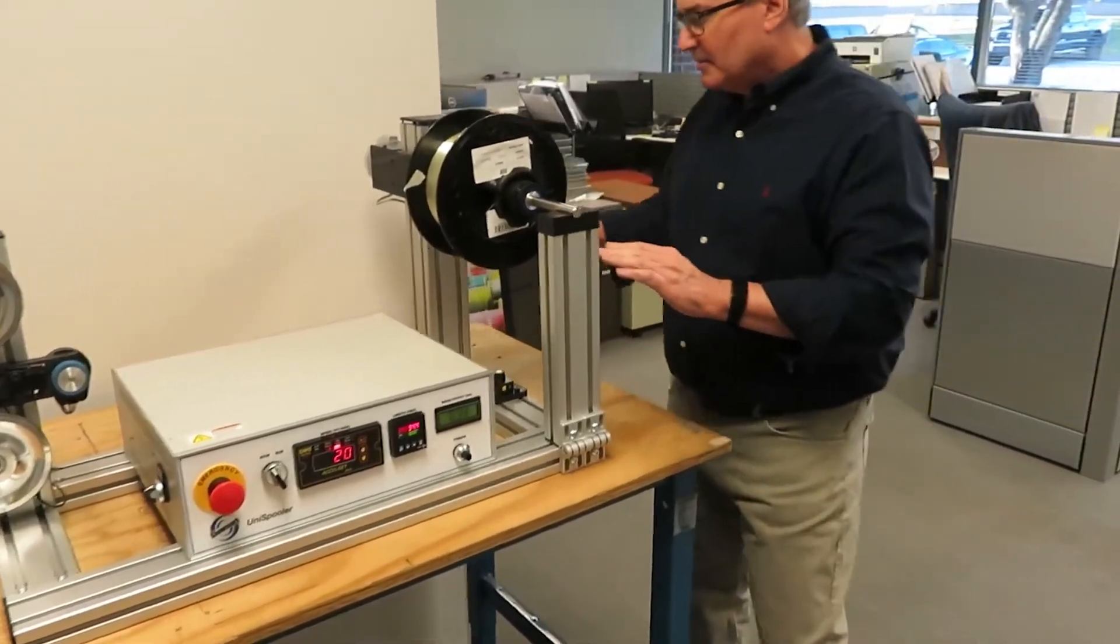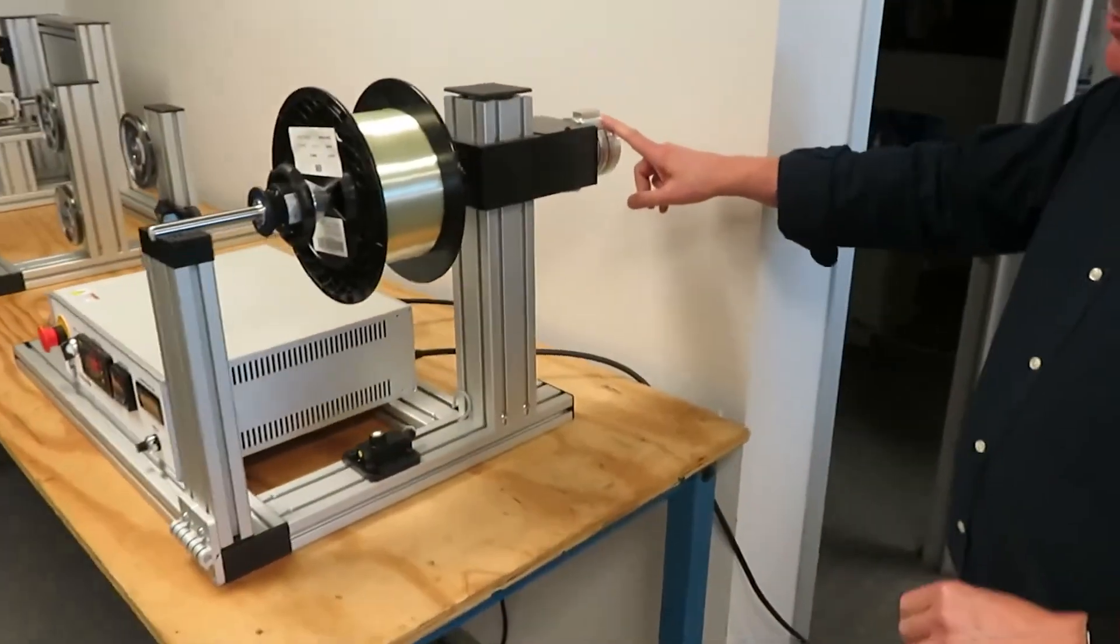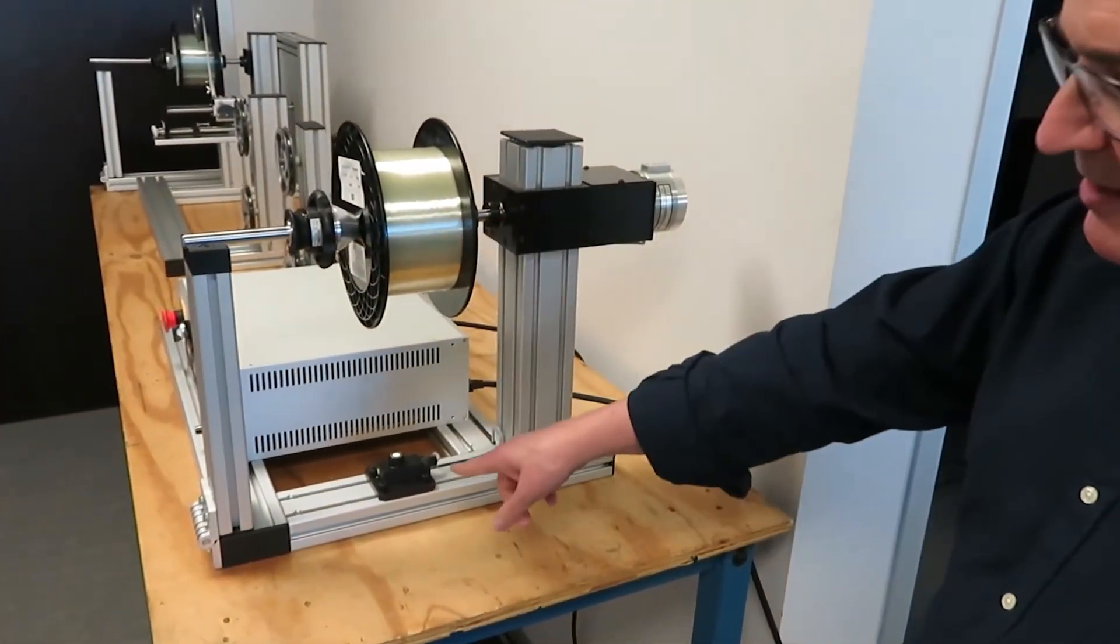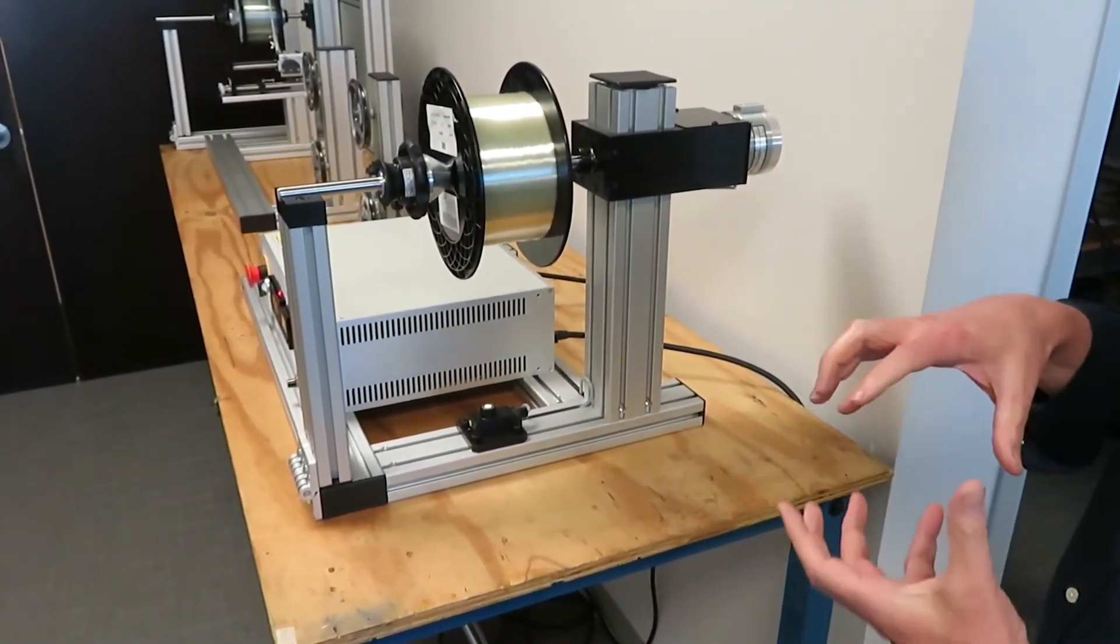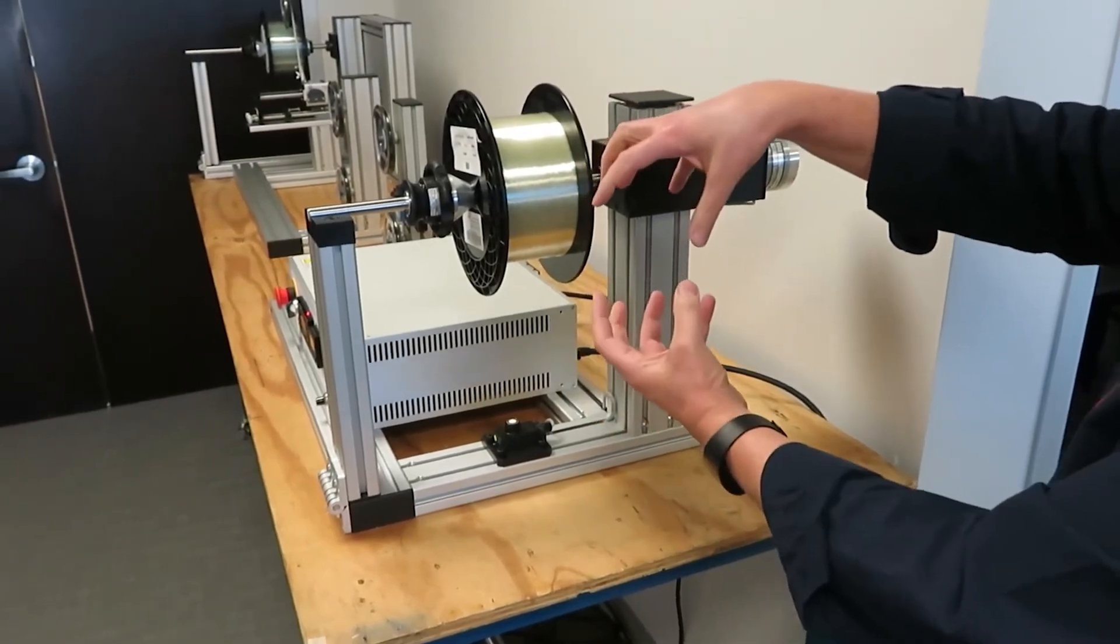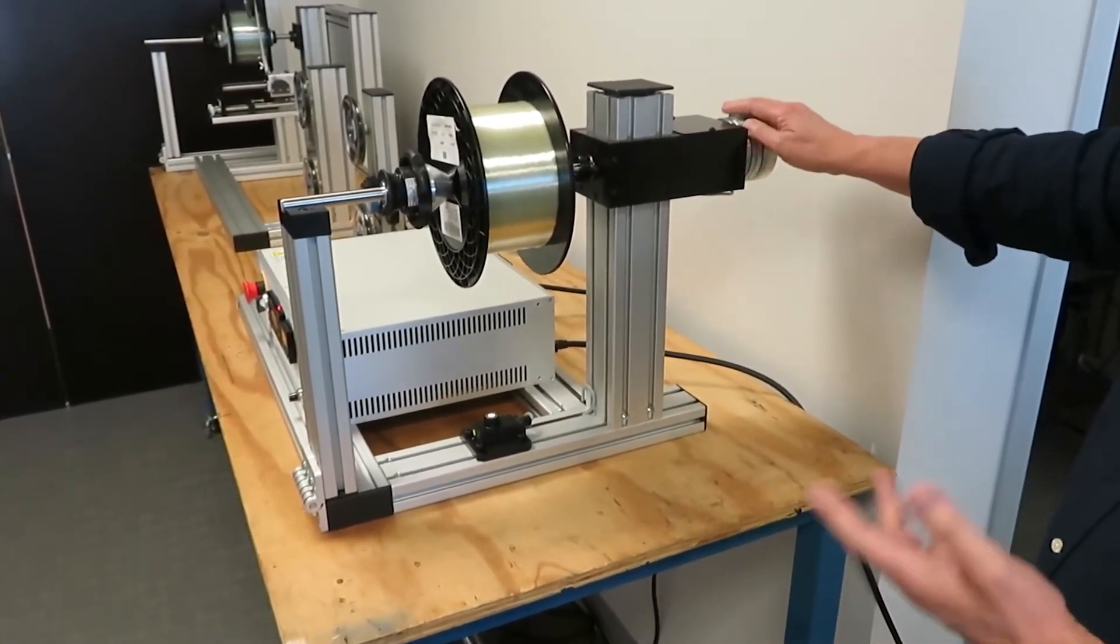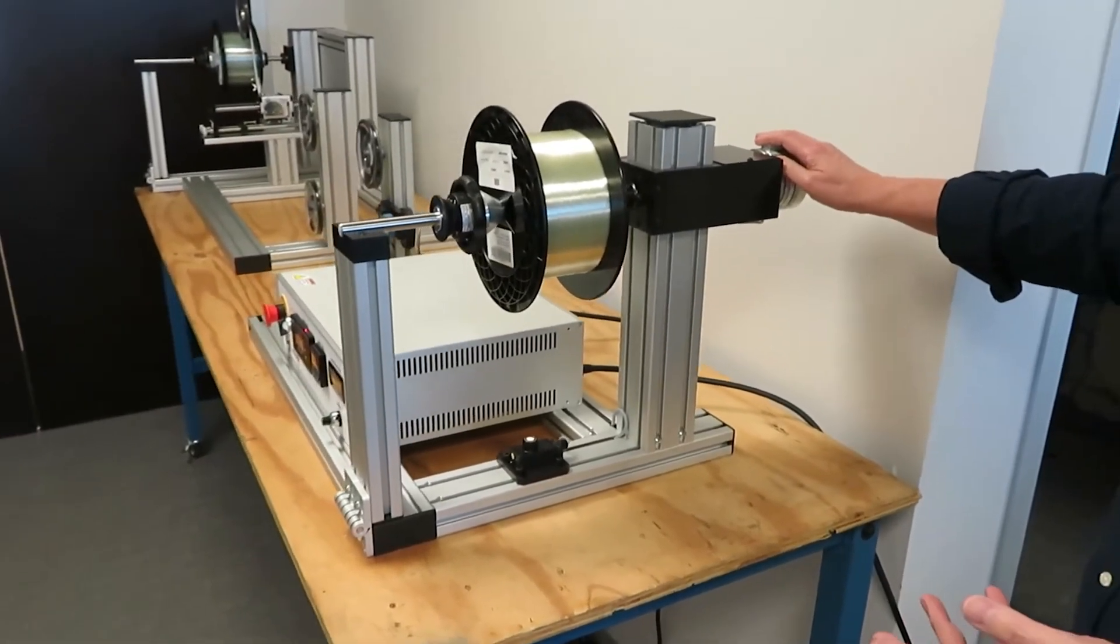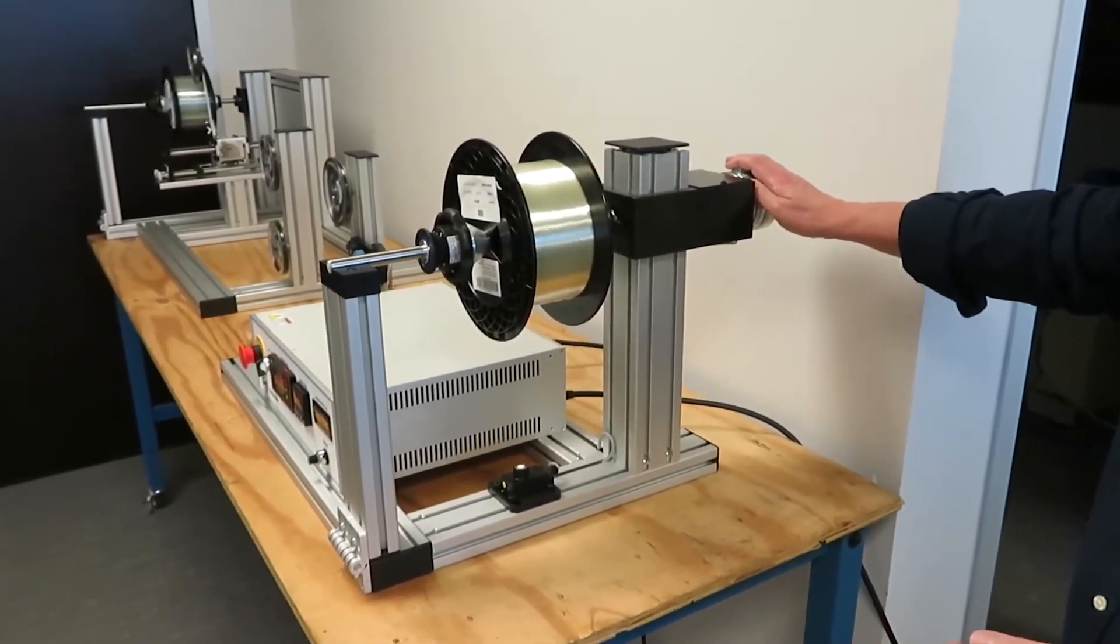We also have a closed-loop electronic brake on here where we're monitoring the diameter change of the payoff spool with an ultrasonic sensor below it that constantly monitors the diameter change and as that spool gets smaller it'll lower the amount of current going to the brake to reduce the amount of torque generated by the brake with the goal of maintaining constant tension. It does a pretty good job of that.